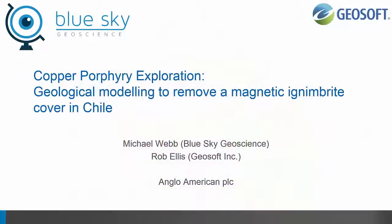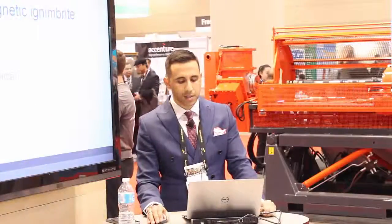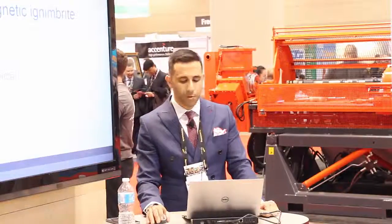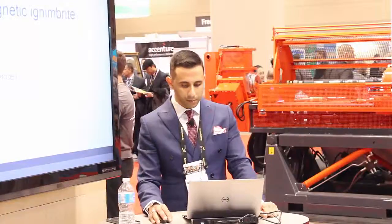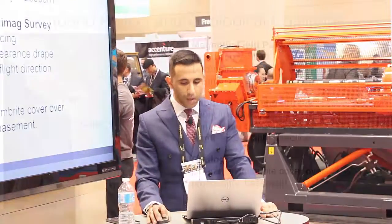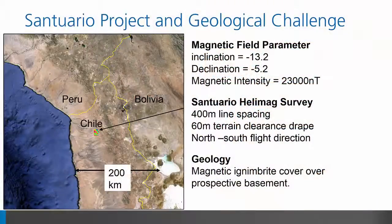As an example of the integration of geological information to improve geophysical inversion comes from Michael Webb of Blue Sky Geoscience in Perth. Michael and GeoSoft's Rob Ellis recently presented this example of a copper porphyry exploration in Chile, courtesy of Anglo-American. The copper porphyry project lies under cover along the Domioco fault system in northern Chile, which is home to some of the world's largest copper porphyry deposits.